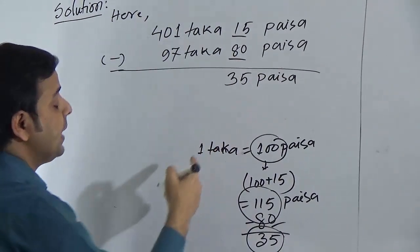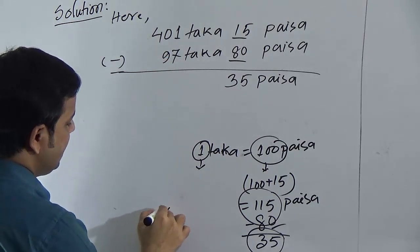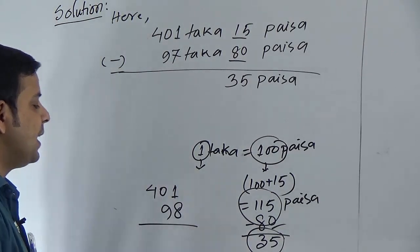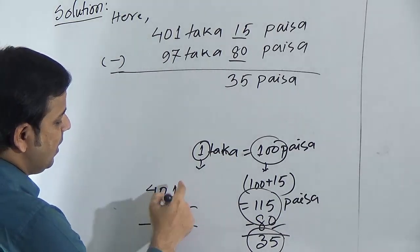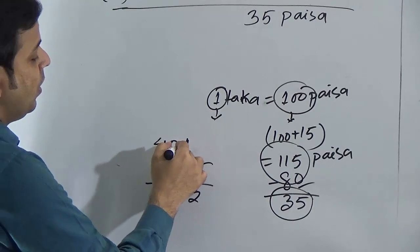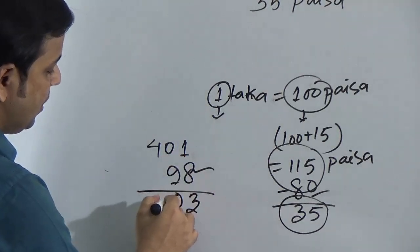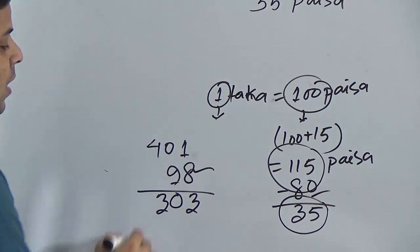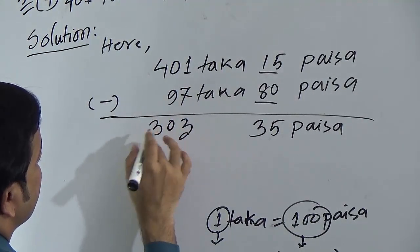Students, as I have taken 1 taka as loan, I have to give that 1 with 97. Now 97 becomes 98. We have to subtract 98 from 401. Subtract 8 from 1 — it is greater, so take 1 as loan: this becomes 11. Subtract 8 from 11, we get 3. I have taken 1 as loan so give that 1 here, this becomes 10. Subtract 0 from 0. Now subtract 1 from 4, this will be 3. We get 303 taka.